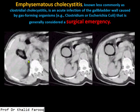Emphysematous cholecystitis can be seen with the help of x-ray of the abdomen and CT. When we compare these two modalities, we prefer CT over x-ray, because the presence of air in the wall of the gallbladder makes it difficult to assess with ultrasound. So emphysematous cholecystitis is a surgical emergency and the best modality for its assessment is CT scan. Thank you very much. As-salamu alaykum wa rahmatullah.